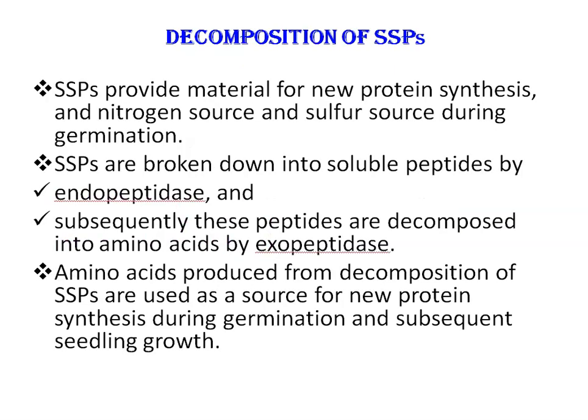Seed storage proteins provide material for new protein synthesis and also serve as a nitrogen and sulfur source during seed germination. Seed storage proteins are broken down into soluble peptides by endopeptidase enzymes, and subsequently these peptides are decomposed into amino acids by exopeptidases. Amino acids produced from decomposition of seed storage proteins are used as a source for new protein synthesis during germination and subsequent seedling growth.